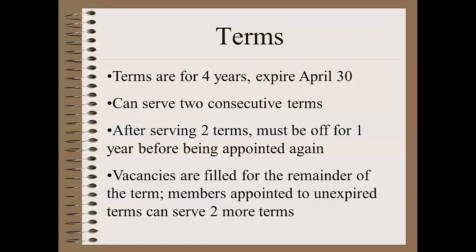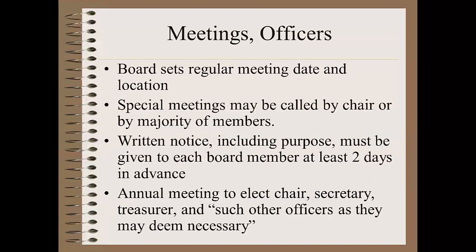One way I'd recommend is to take the two most recent appointments and have them expire in the fourth year, then work back from there. Make sure you stay on that schedule from there on out. The board sets a regular monthly meeting date and location. Special meetings can be called by the chair, or if a majority of the members request one, the chair has to call a special meeting. For special meetings, there must be at least two days' notice in writing to each member, and this has to state the purpose of the special meeting. At the special meeting, the only business can be what's stated in the notice.